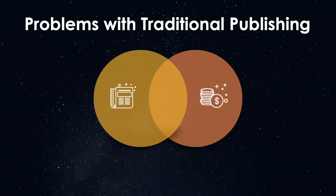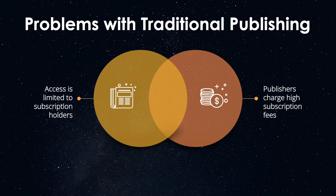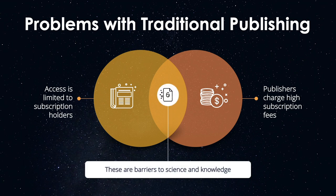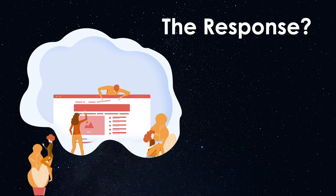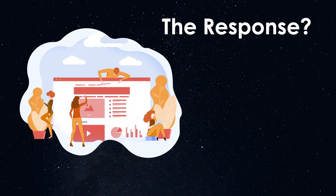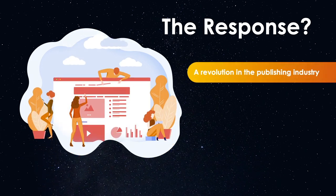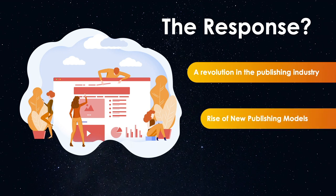Unfortunately, there are two major problems with this model. Firstly, access to research is limited to subscription holders, and secondly, the publishers charge high subscription fees. This lack of access to research hinders both the progress of science and advancement of knowledge in academia. In an effort to solve these inherent problems with traditional publishing, there was a revolution in this industry, and with it came the rise of new publishing models.